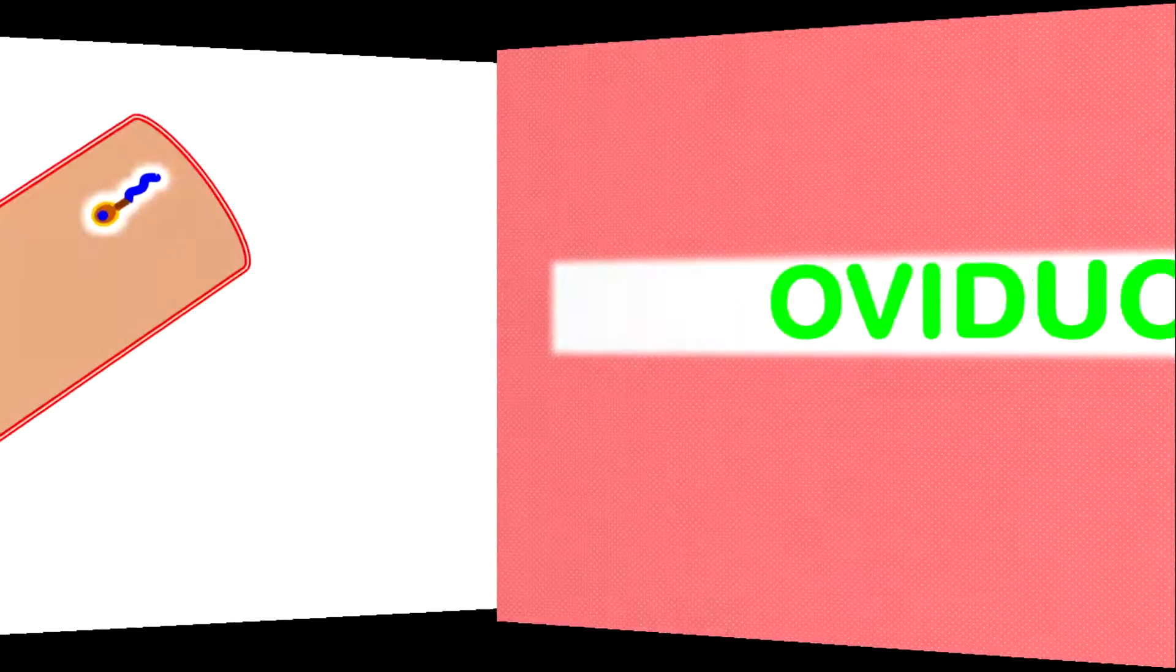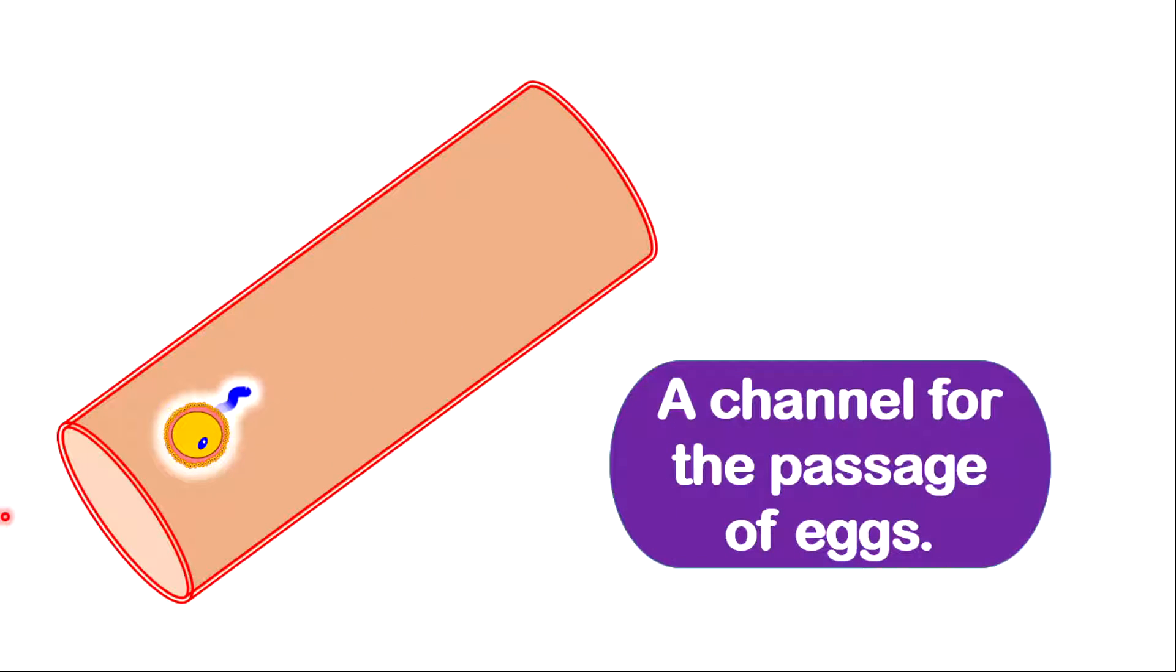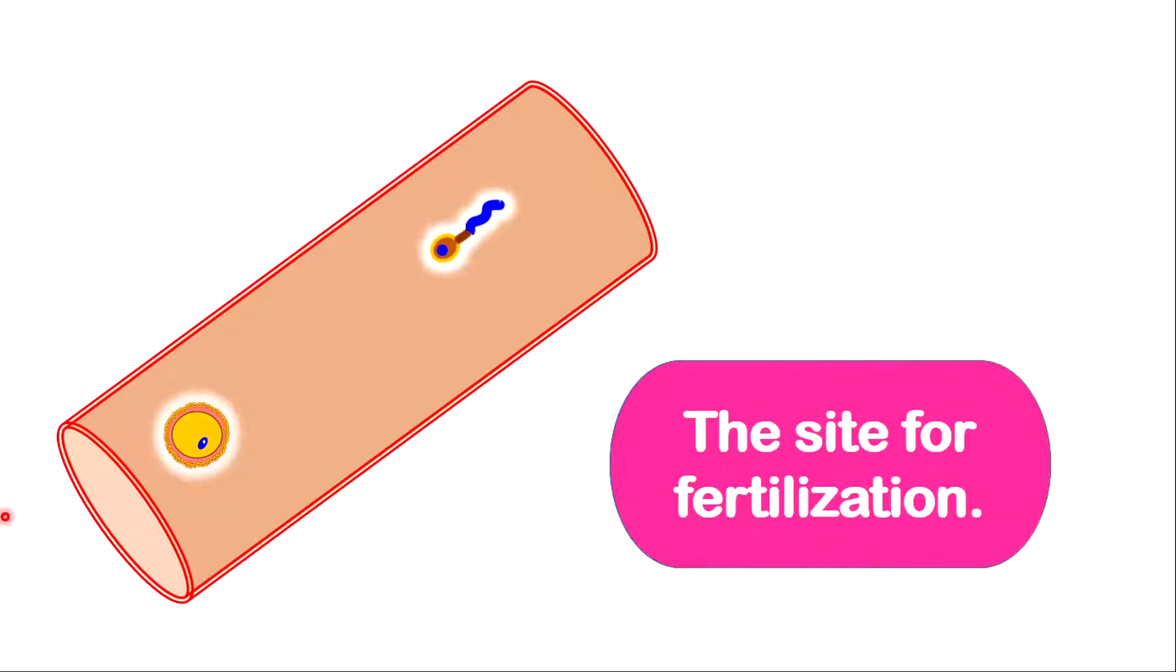Now the oviduct. The oviduct is a very important structure because one, it connects the ovary to the uterus. It also serves as a channel for the passage of egg cells. It is a site for fertilization, which means it is the area where the egg and the sperm cell meet and fuse together, forming the zygote.